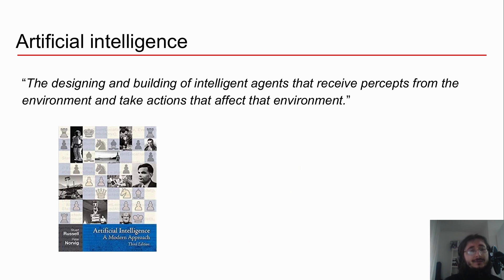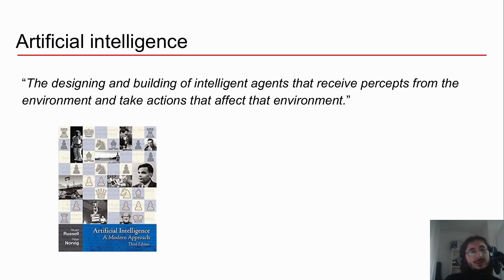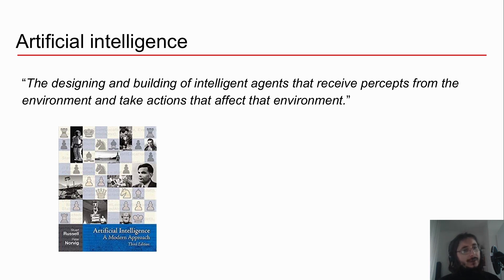There's a fantastic definition given by Russell and Norvig in a book that's basically a Bible for artificial intelligence, called Artificial Intelligence: A Modern Approach. The two scholars define AI as the designing and building of intelligent agents that receive percepts from the environment and take actions that affect the environment. For Russell and Norvig, AI is just the science and art of building intelligent agents.